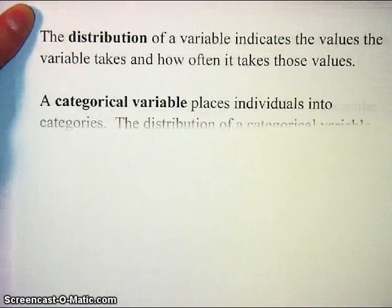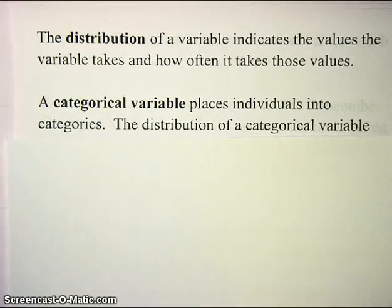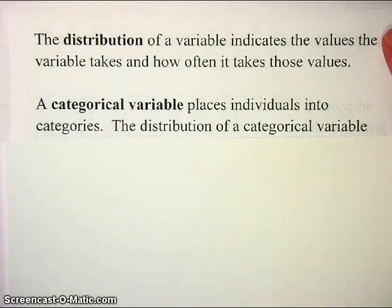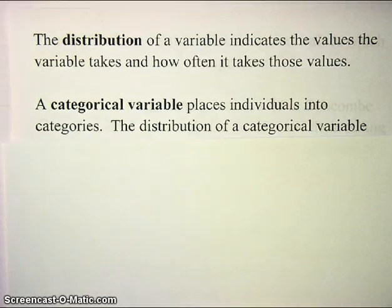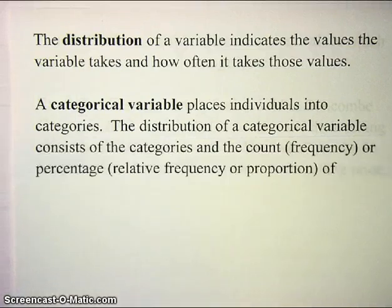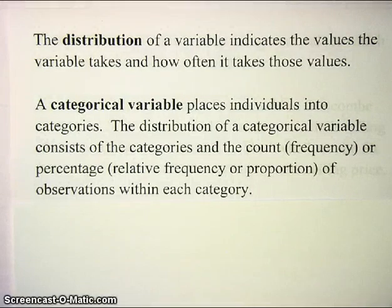A categorical variable places individuals into categories — for instance, male, female, yes, no, maybe, Democrat, Republican, and so on. You can't really average those things or do arithmetic on them; they just are what they are. The best you can do is count them. The distribution of a categorical variable consists of the categories and those counts — what we call the frequency, or the percentage, the relative frequency, or proportion of observations within each category.